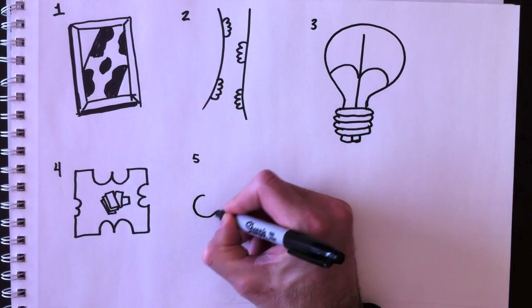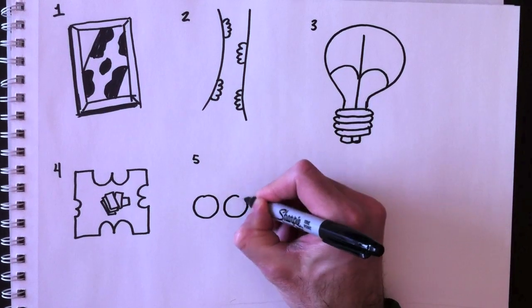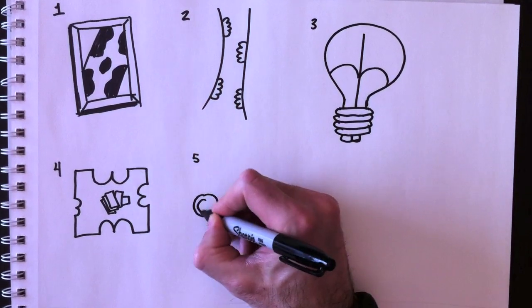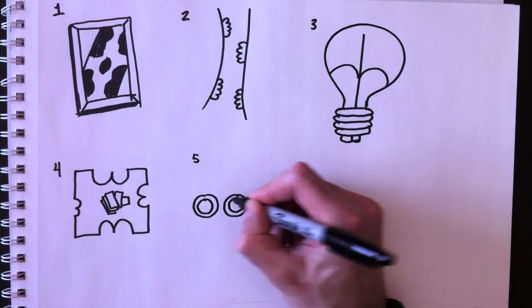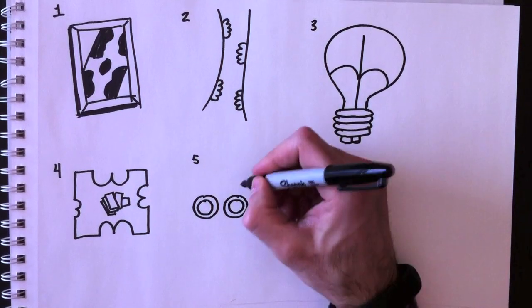Alors certains de ces dessins sont vraiment pour des adolescents. Alors je suis désolé pour les plus jeunes. I'm sorry for the younger folks around watching the video. And what's this one? Number five. Quel est celui-ci, numéro 5?